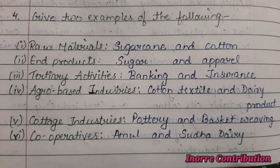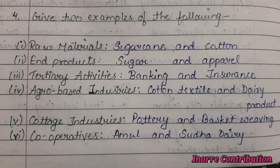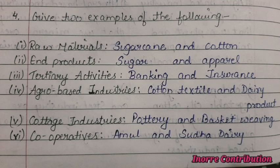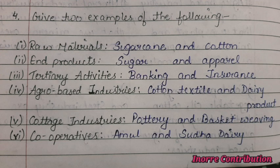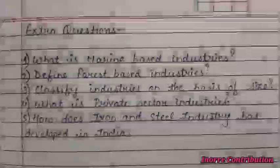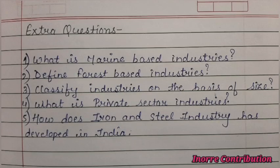Give two examples of the following: Raw materials — sugarcane and cotton. End products — sugar and apparel. Tertiary activities — banking and insurance. Agro-based industries — cotton textile and dairy products. Cottage industries — pottery and basket weaving. Cooperatives — Amul and Sudha Dairy.